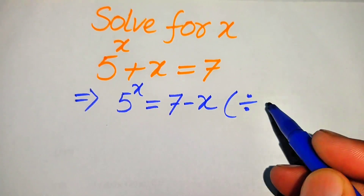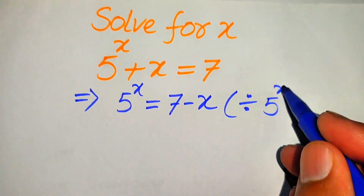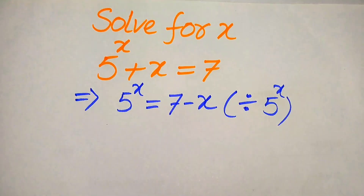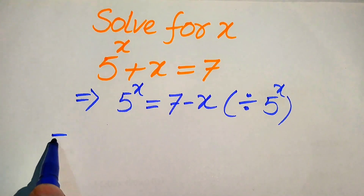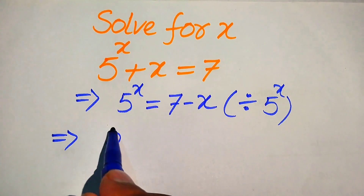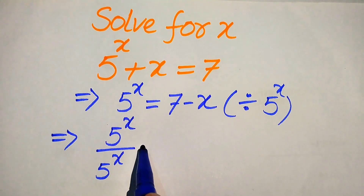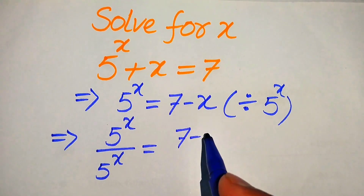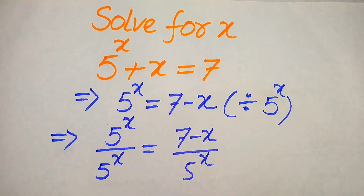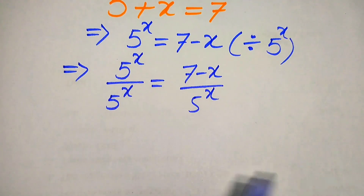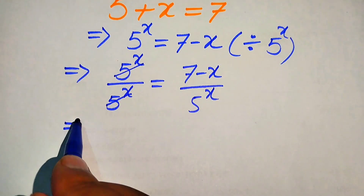Now in the next step, we divide both sides by 5 to the power of x. When we divide both sides by 5 to the power of x, it will be written as 5 to the power of x divided by 5 to the power of x is equals to 7 minus x divided by 5 to the power of x. This term and this term cancel out by each other.